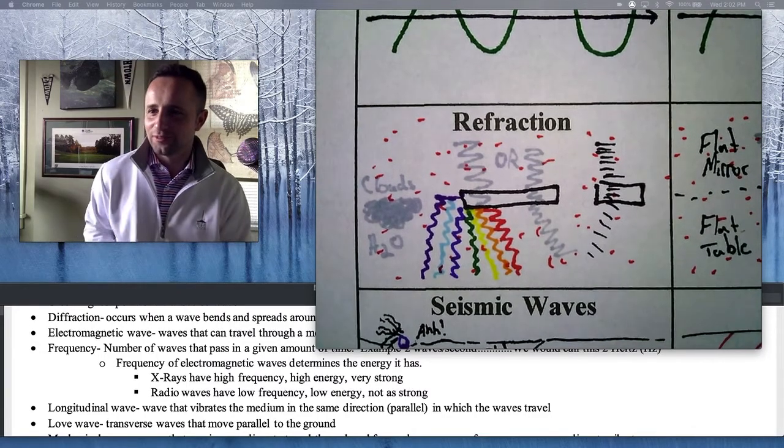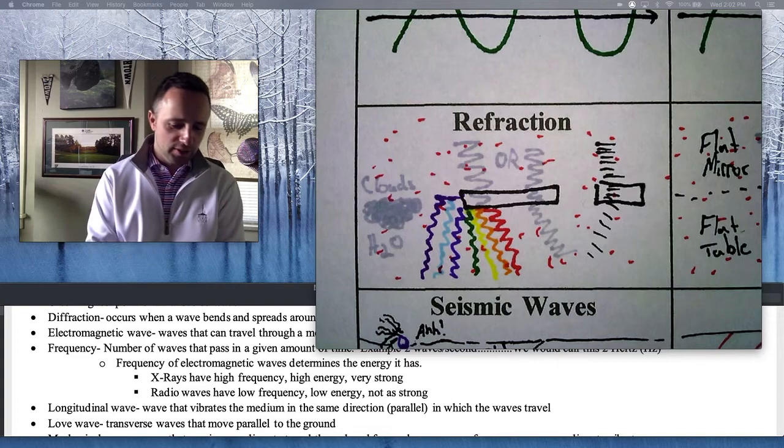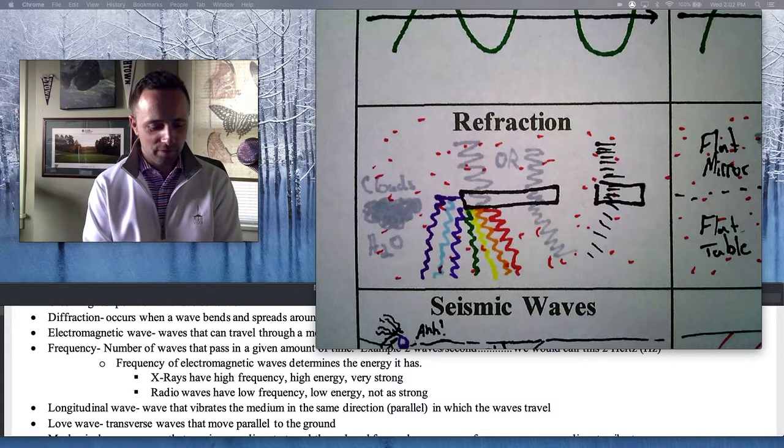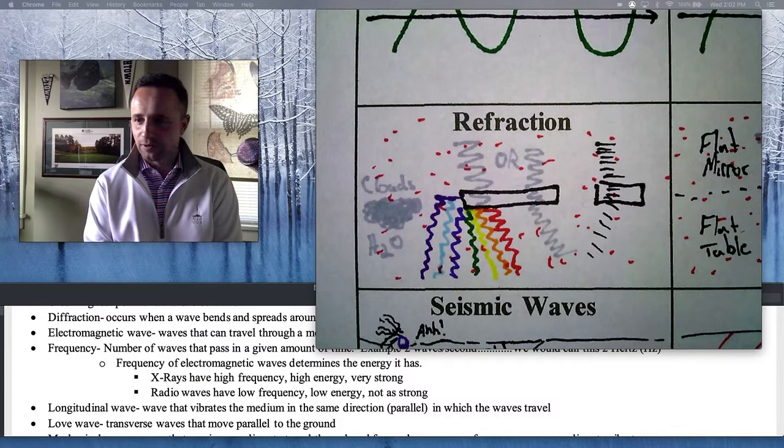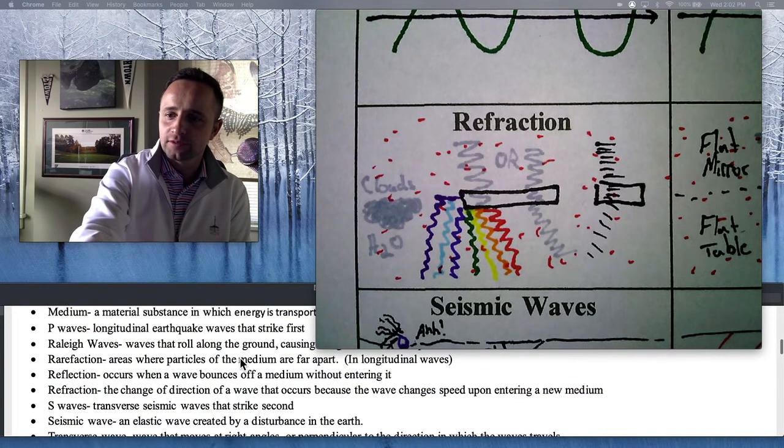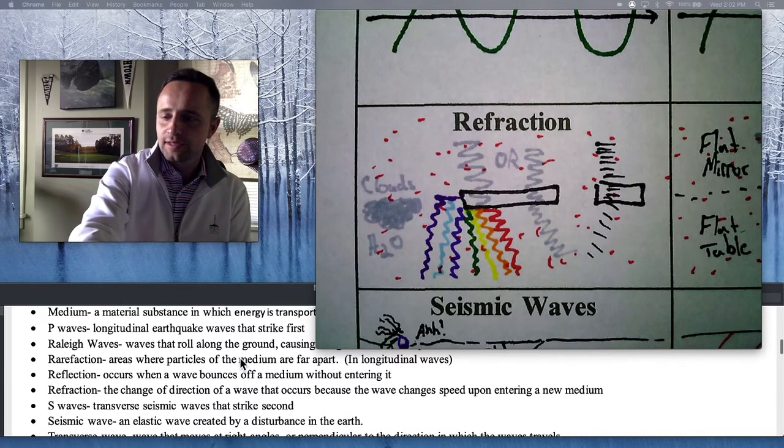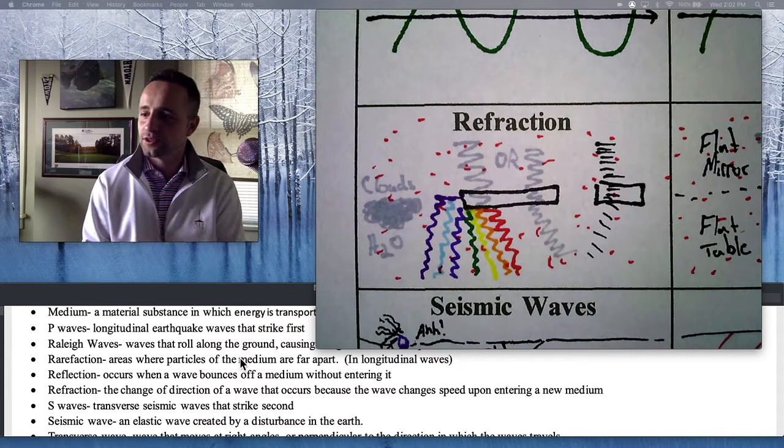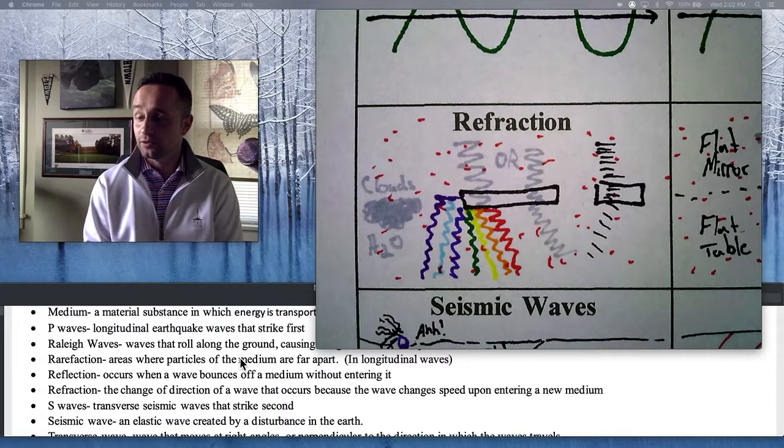For row number four, we have what you guys did the first week of this whole quarantine. The word is refraction. If we scroll and look at refraction, it says that it's the change of direction of a wave that occurs because the wave changes speed upon entering a new medium.